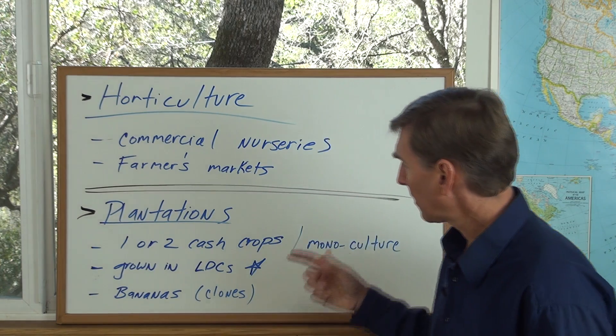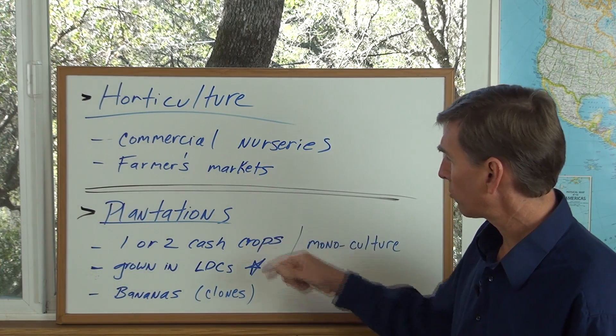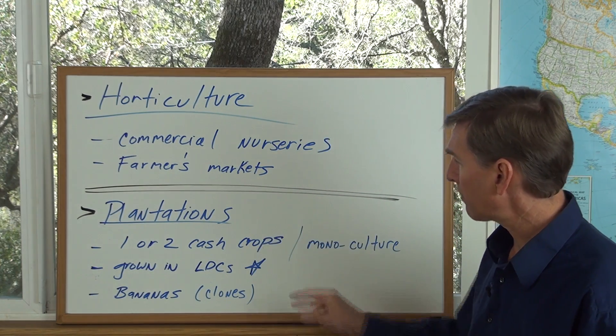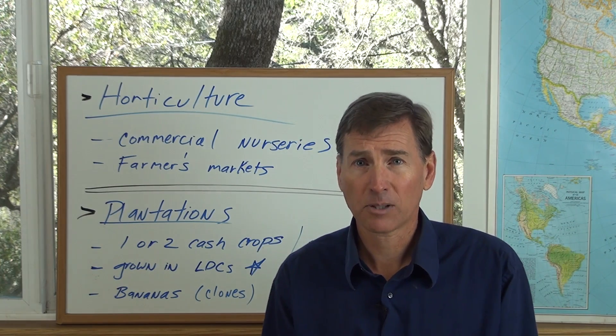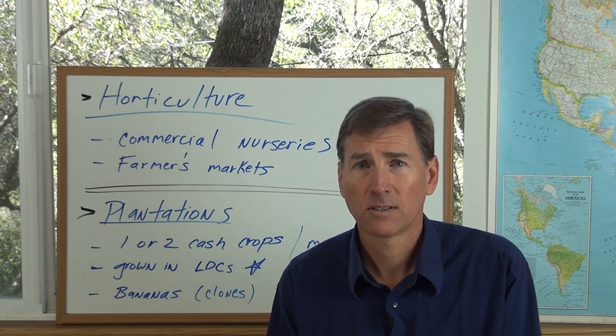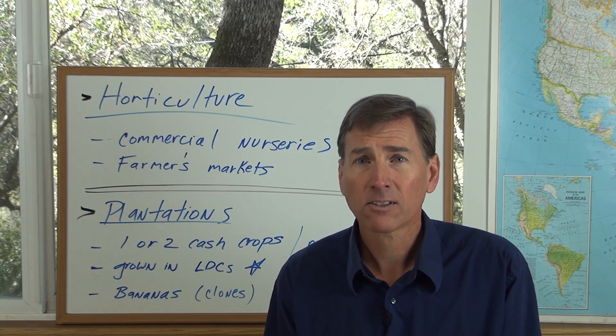Key points for plantations: one or two cash crops, grown in less developed countries. That concludes our talk on commercial agriculture.